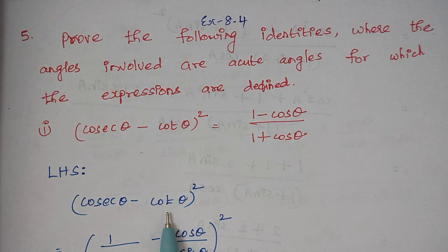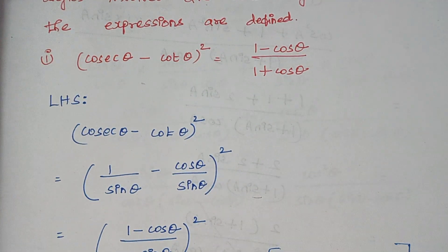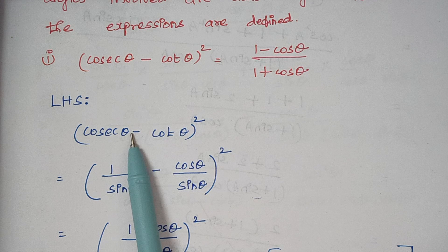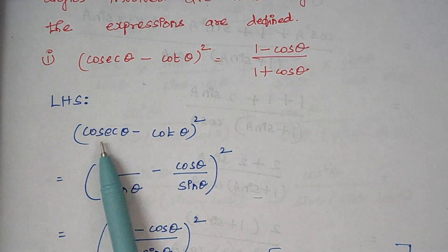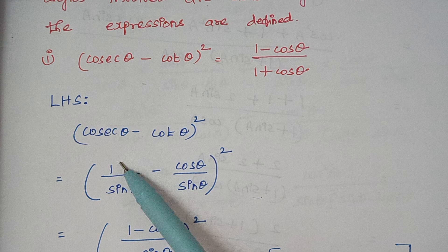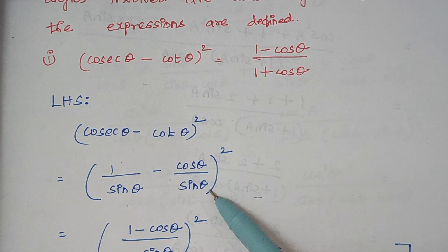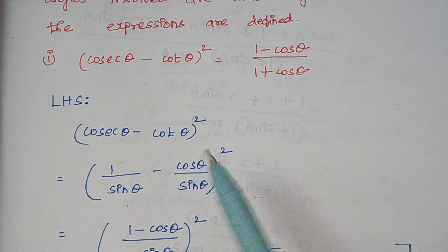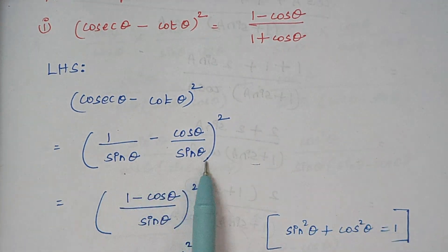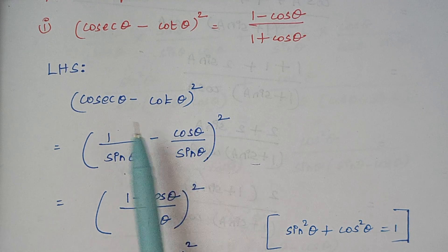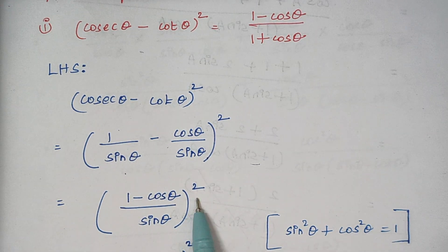So first is cosecant theta minus cos theta, the whole square. Cosecant is expressed in the form of sin and cos theta in the form of cos and sin. So cosecant theta is 1 by sin theta, minus cos theta is cos theta by sin theta. Since the denominator terms are the same, we can combine the numerator terms: 1 minus cos theta divided by sin theta, the whole square.